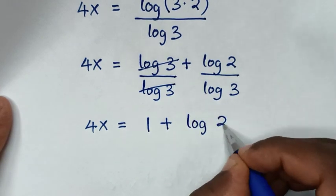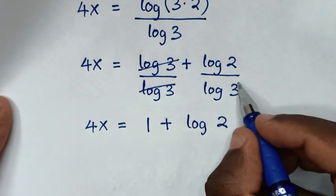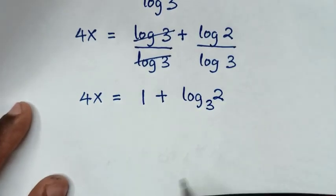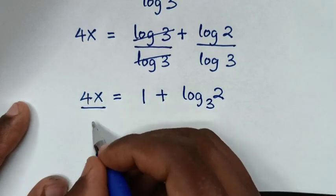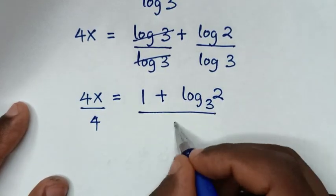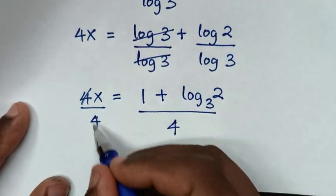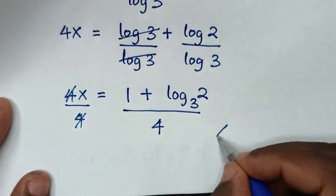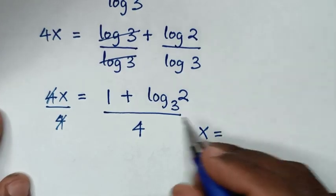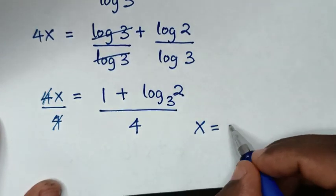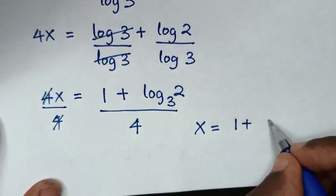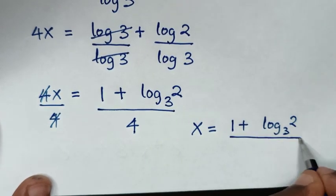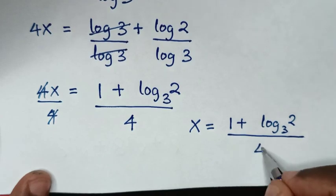So it will be log(2) over log(3), which is the same as log base 3 of 2, with the 3 in the base. Then in the next step, we'll divide by 4 on both sides, so this and this will cancel, and it will be x is equal to (1 plus log base 3 of 2) over 4.